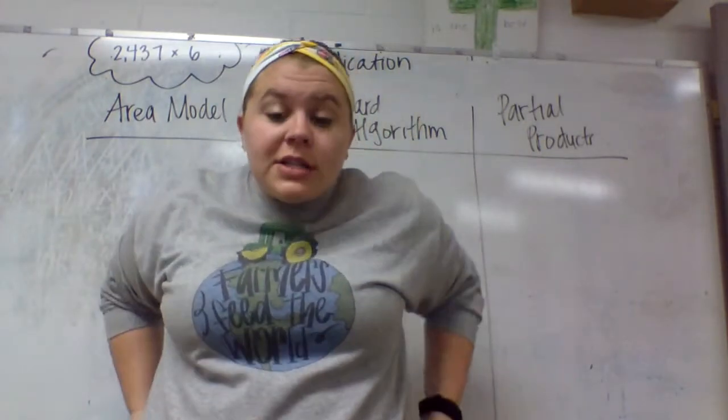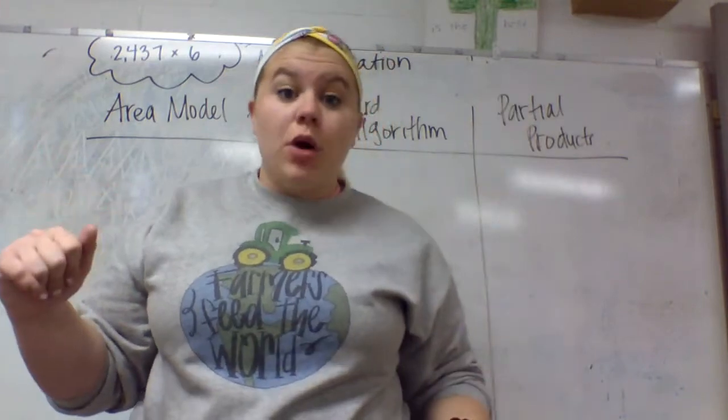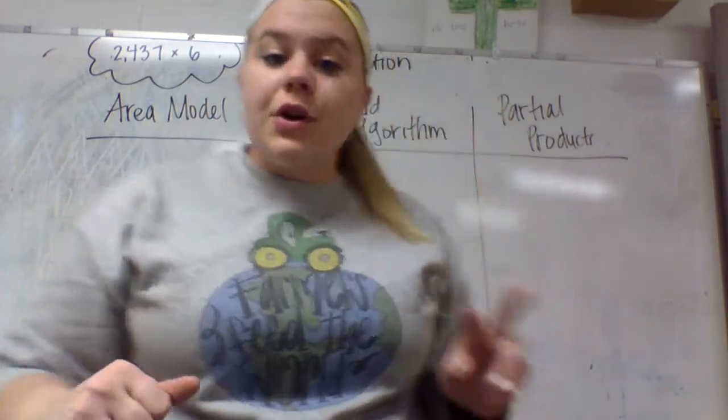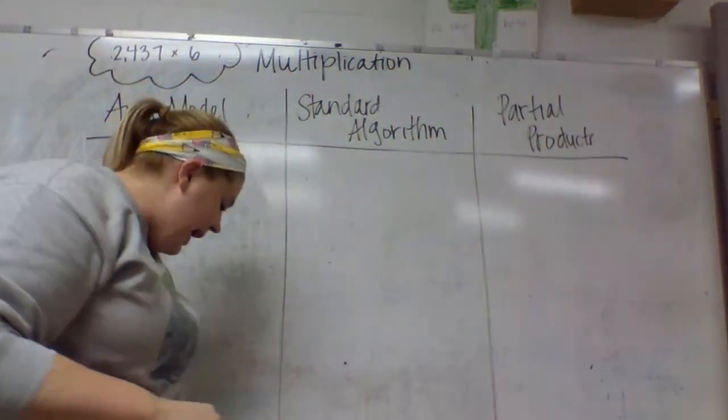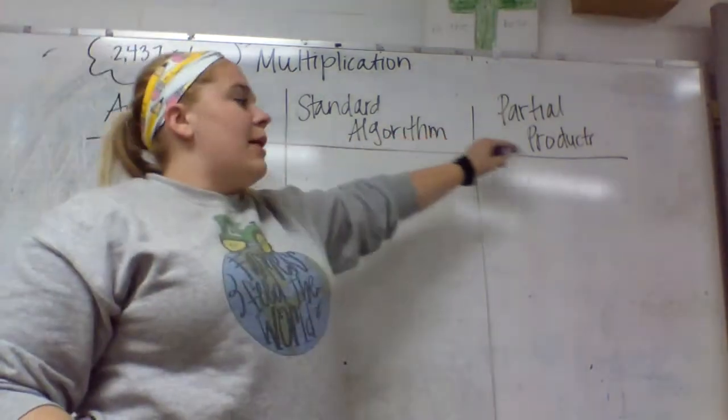So we are going to start out with the four digit one, because if you can do it, then you can do any of the smaller ones. There are three different strategies that we're going to look at: area model, standard algorithm, and partial products.